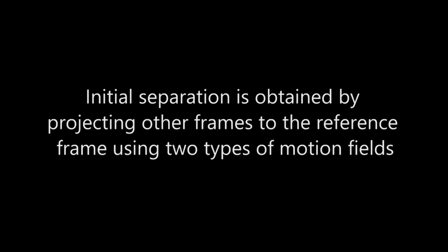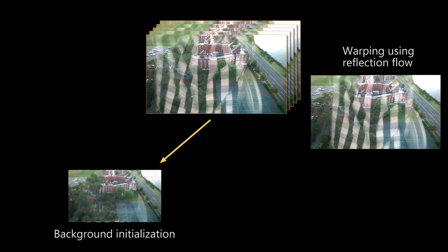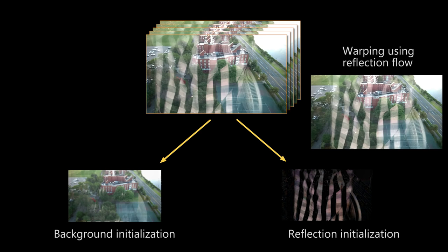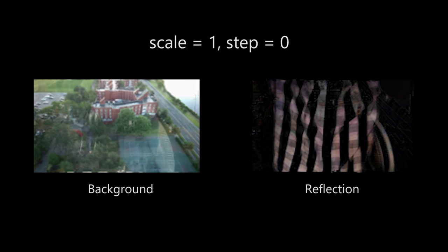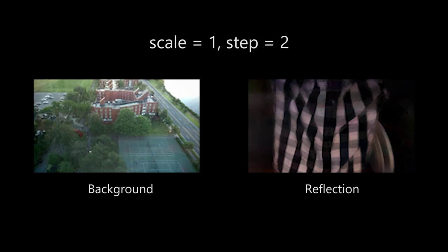The initial separation of the background and reflection is obtained by projecting each image to the reference frame using the two motion fields and combining the projected images. Using this initialization, we minimize the objective function by iteratively solving for the images and flow fields for background and reflection layers in a coarse-to-fine manner. The coarse layer helps us to correct low spatial frequency errors before refining each image.